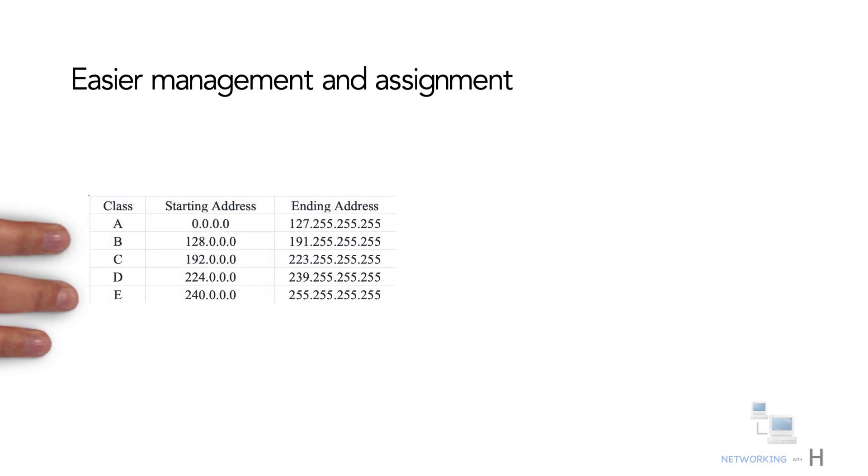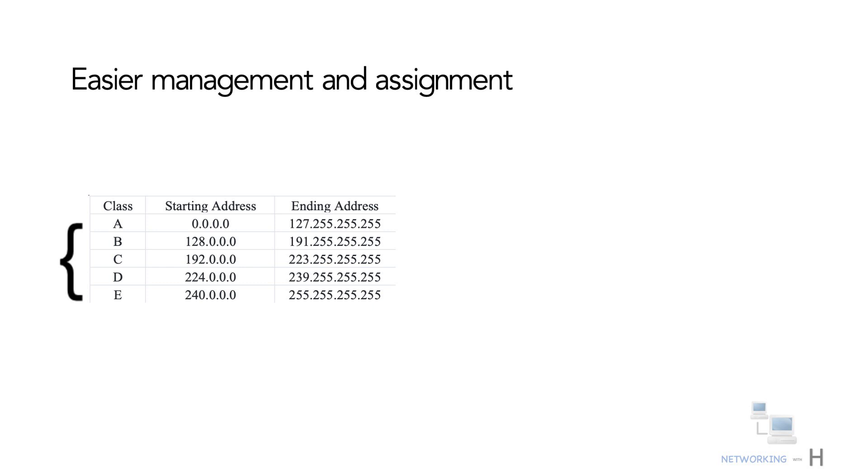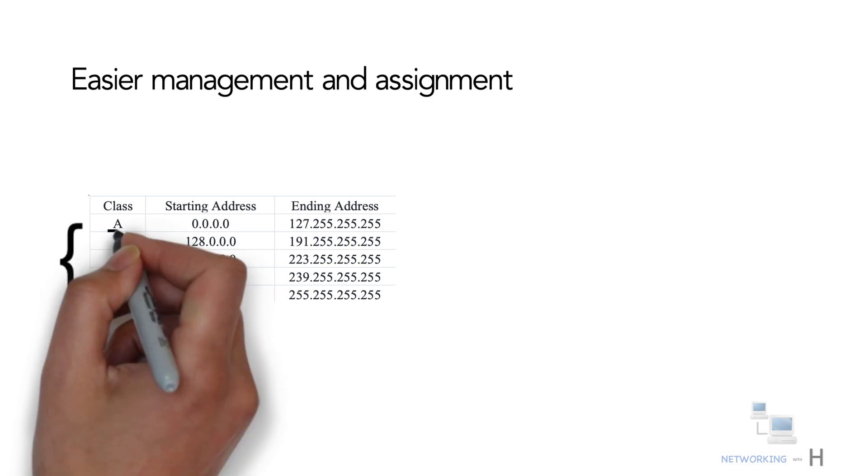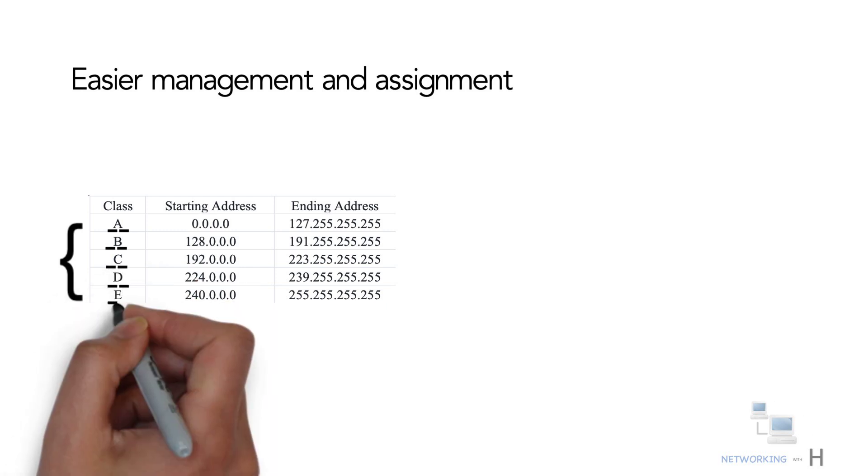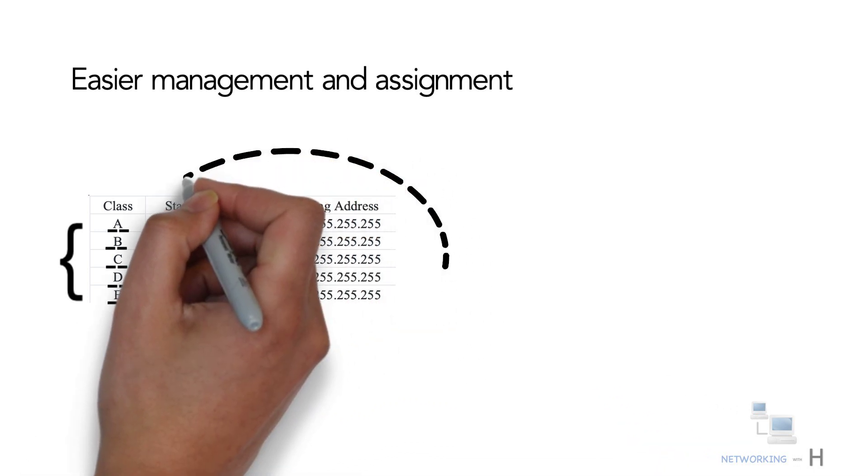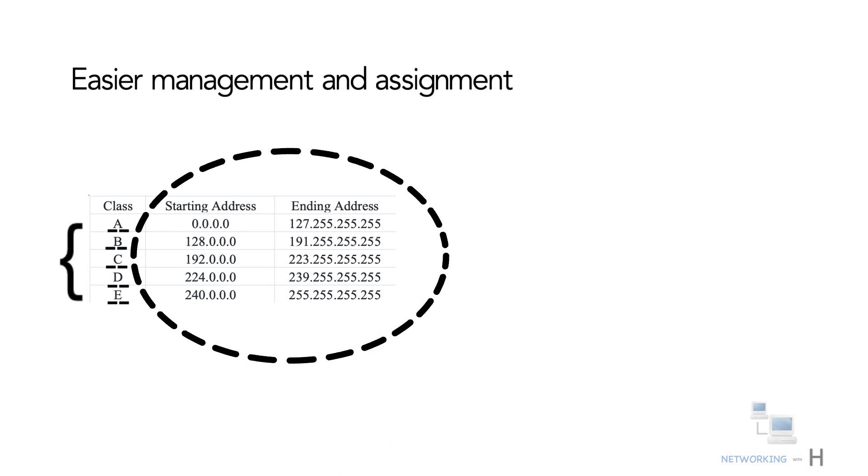Class A, Class B, Class C, Class D, and Class E. Each class has a range of valid IP addresses. The value of the first octet determines the class.